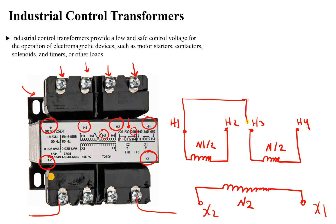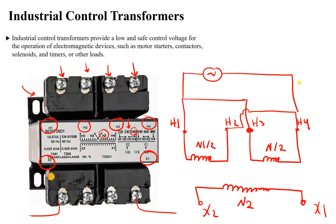Connect H1 with H3, and connect H2 with H4. Then connect the supply at H1 and H4 — so 240 volts is applied between H1 and H4.